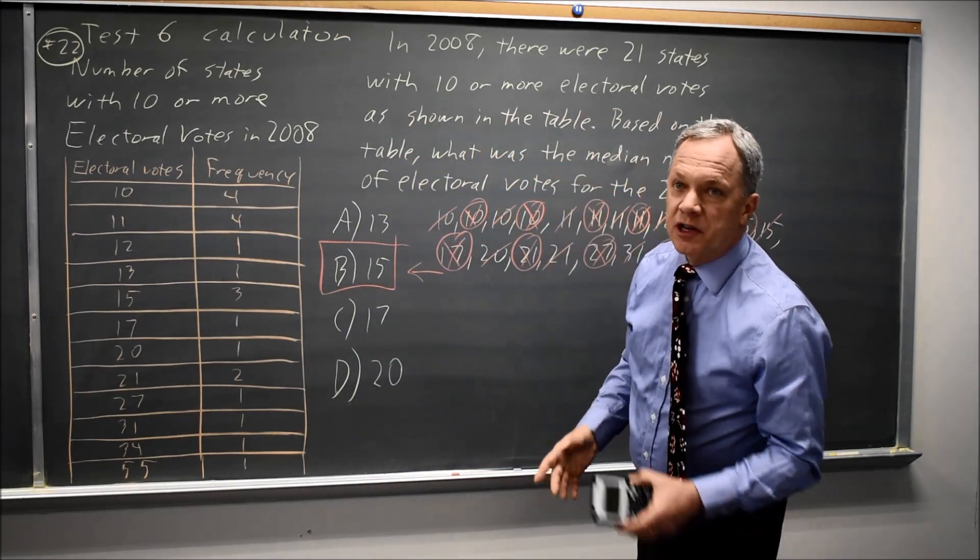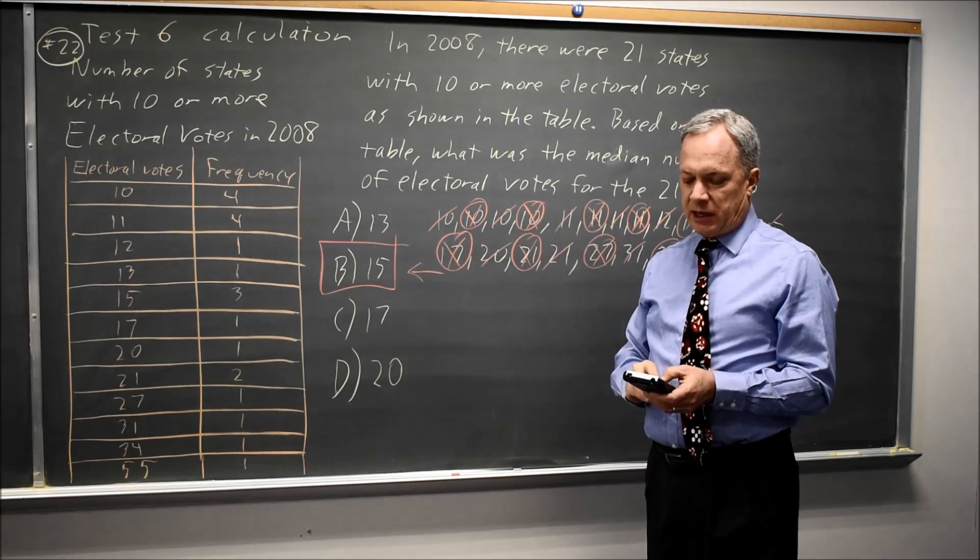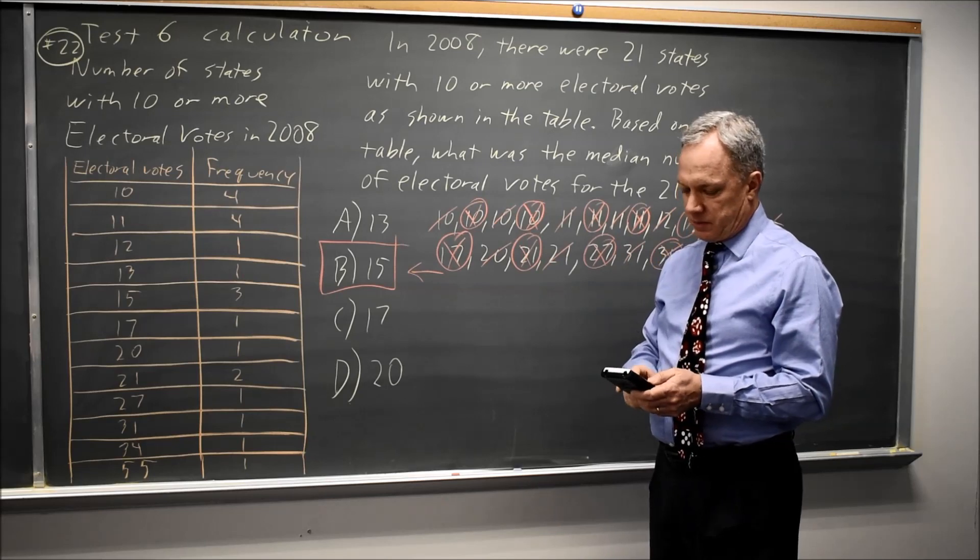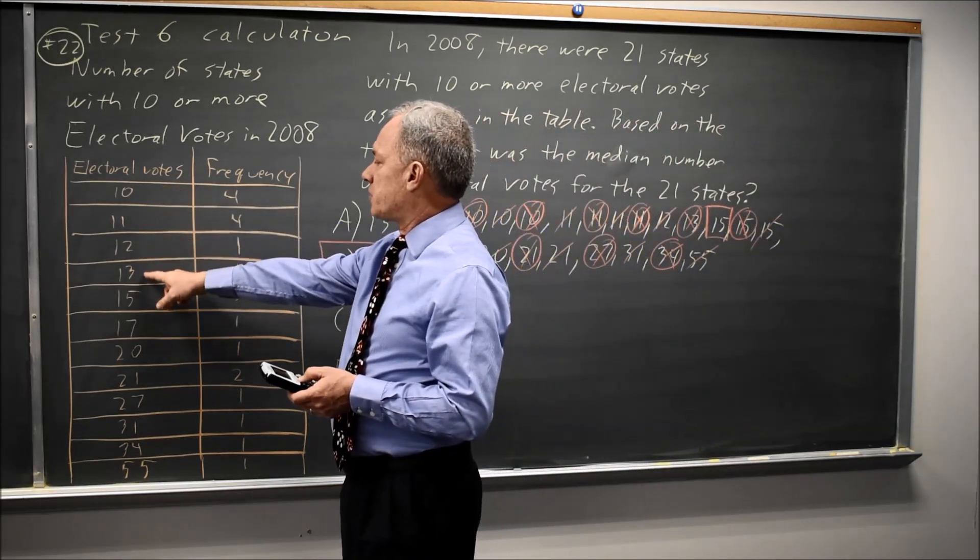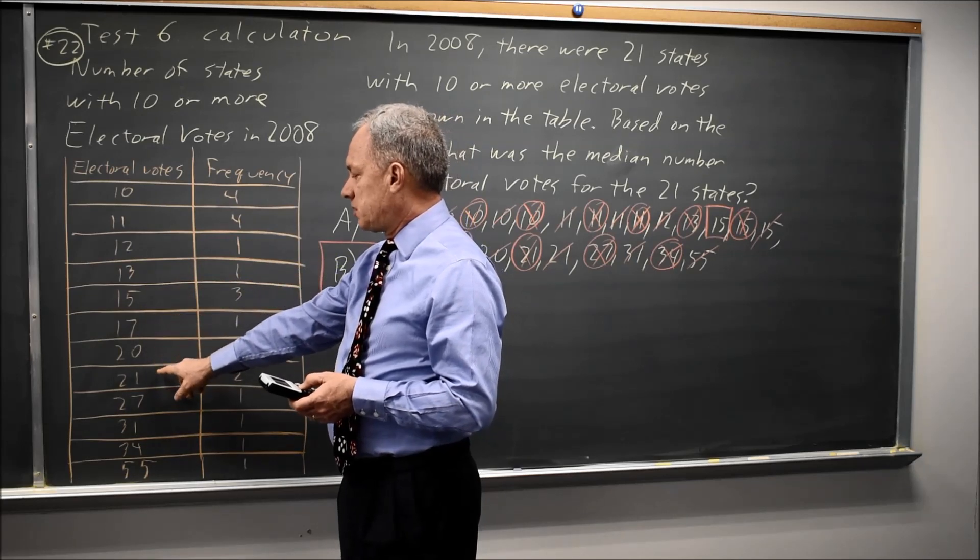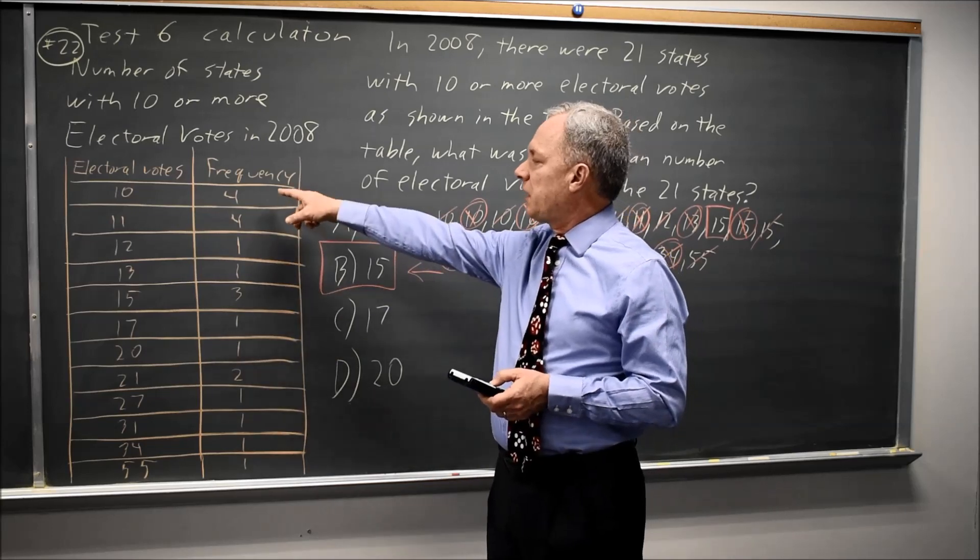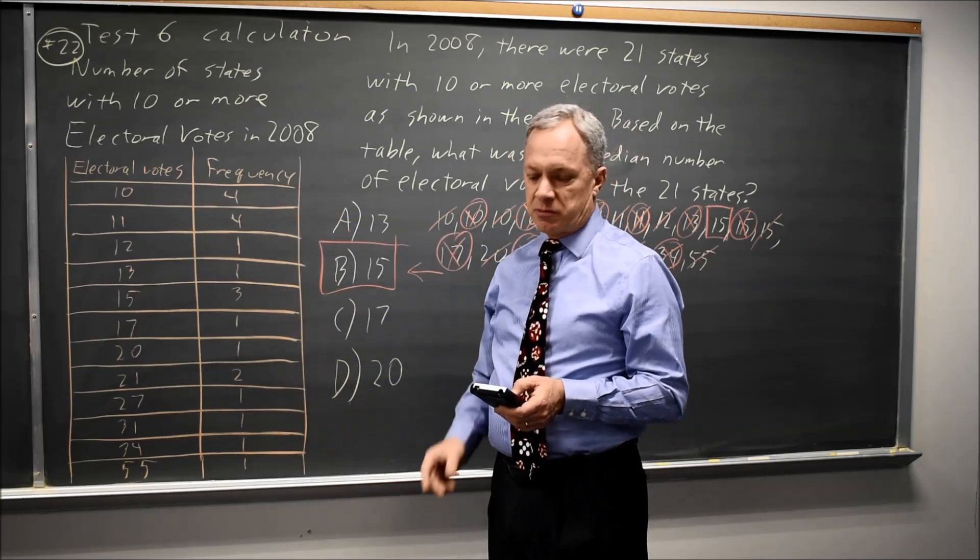Alternatively, on your graphing calculator, you can go to stat, edit, which is just enter on the TI-83, TI-84, et cetera, and enter these values: 10, 11, 12, 13, 15, 17, 20, 21, 27, 31, 34, 55 in list one, and enter these frequencies in list two. Make sure your rows match.